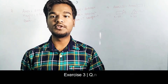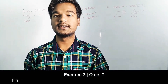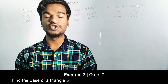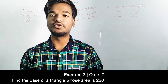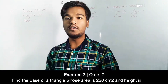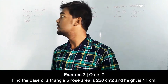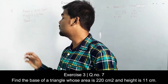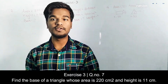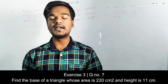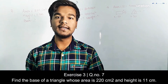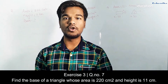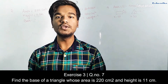In this module we are going to discuss the solutions for questions seven, eight, and nine. In question seven, we are given the area of a triangle and the height of that triangle, and we need to find the base. We will use the formula: area of triangle equals half into base into height, and substitute the given values.